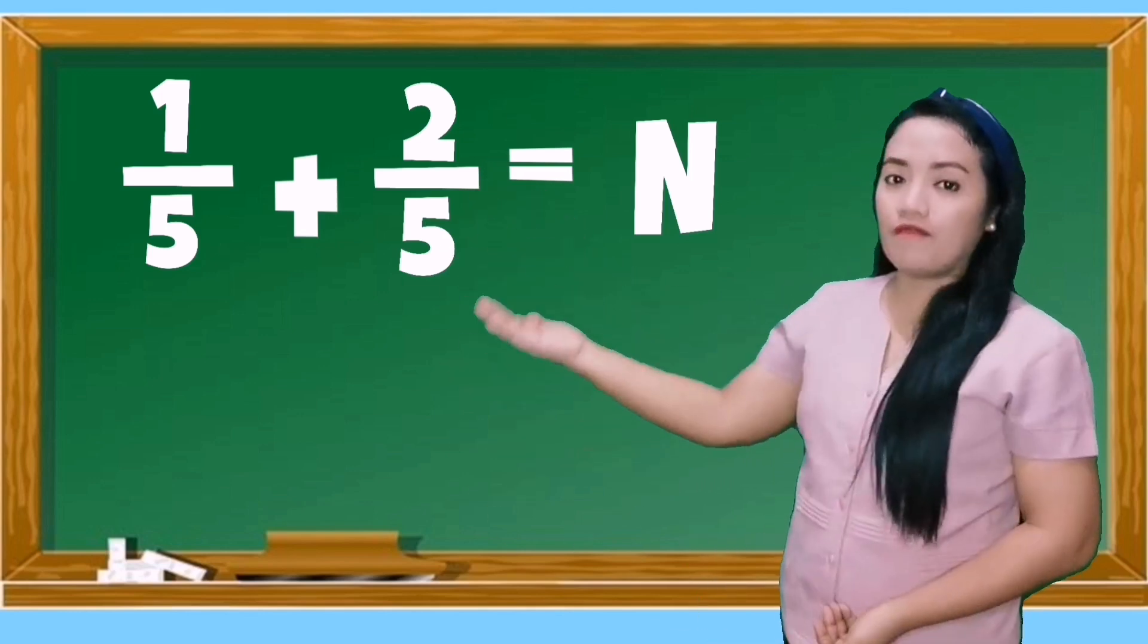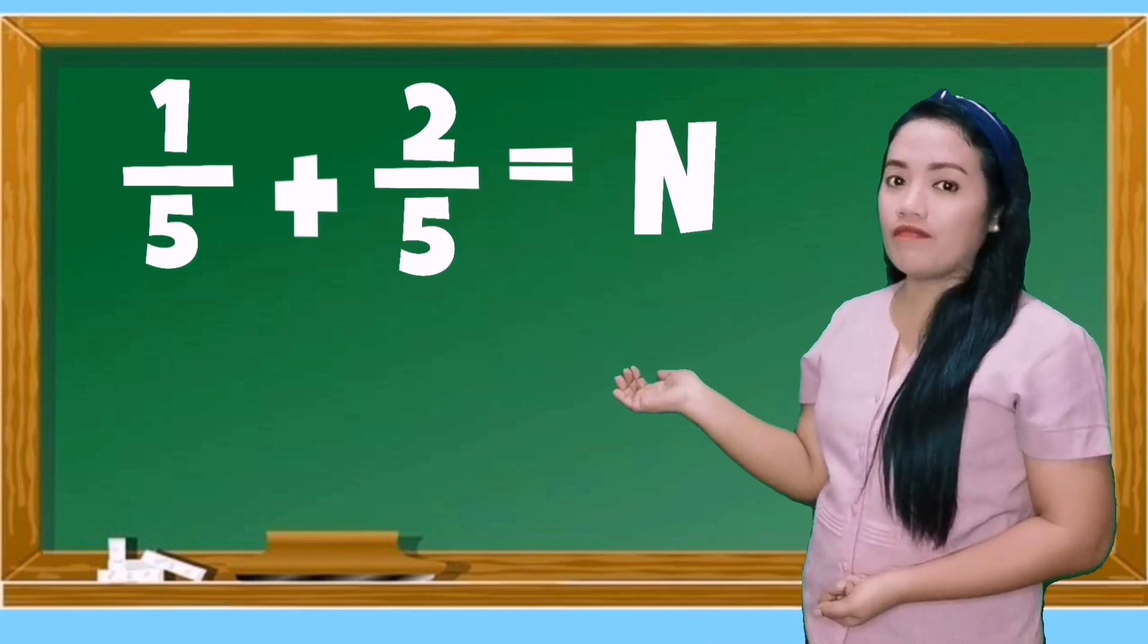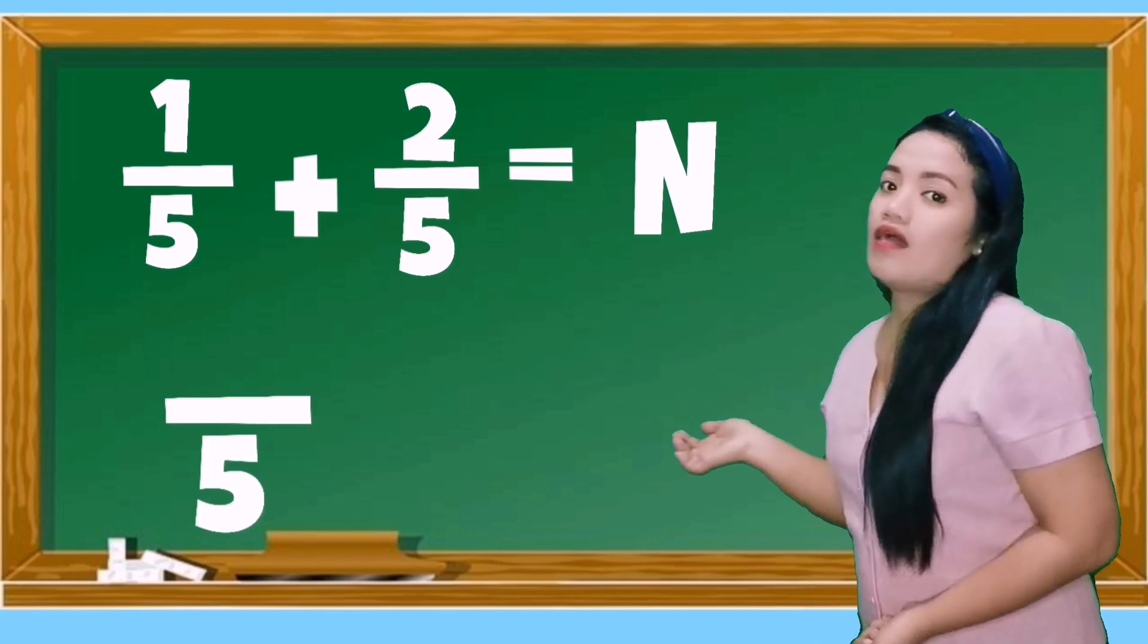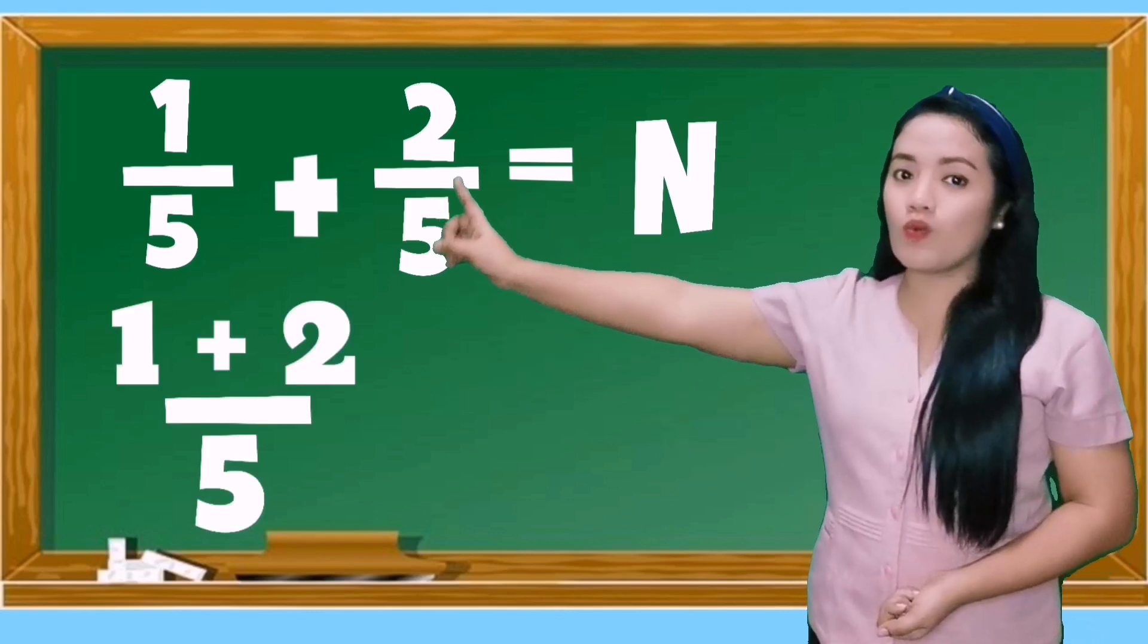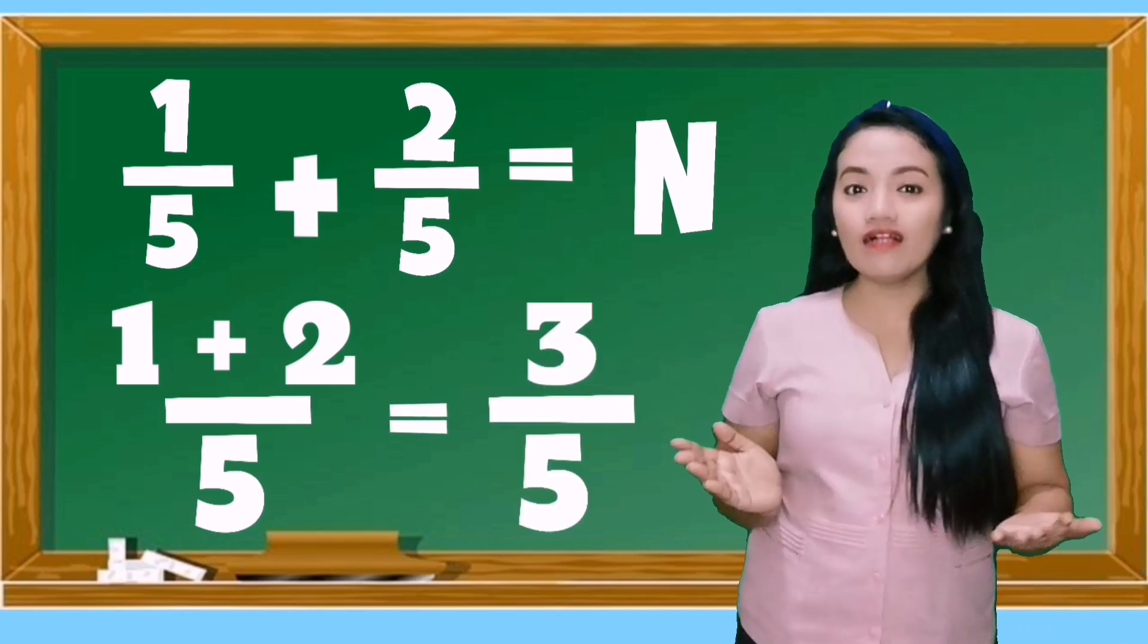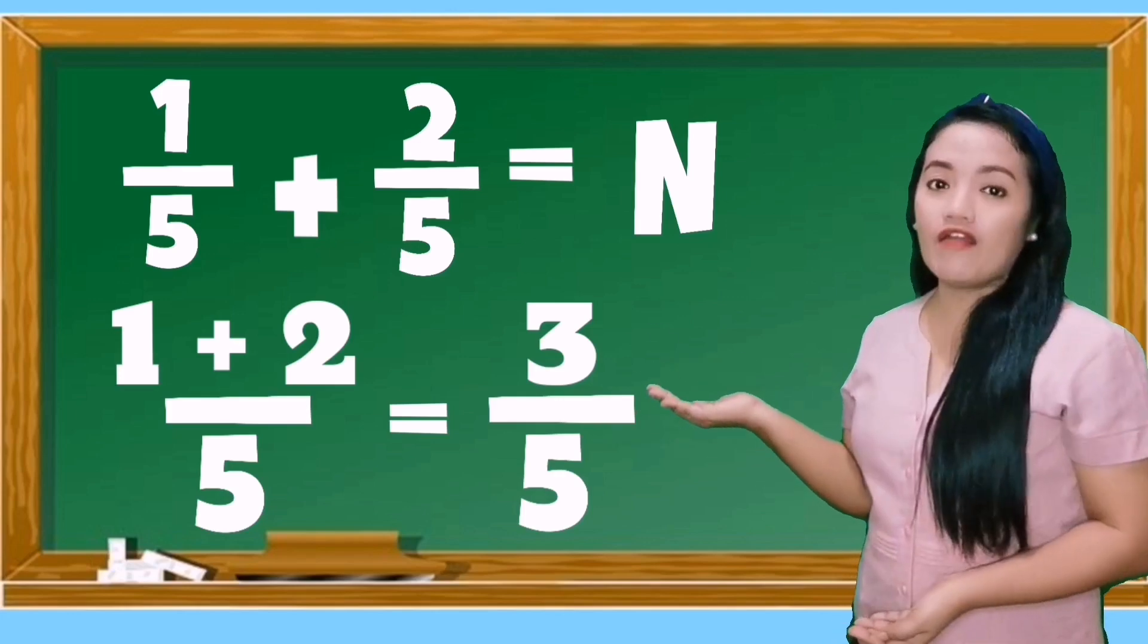1/5 plus 2/5, copy 5 as your denominator, then add the numerators 1 plus 2 is equal to 3. Now the final answer is 3/5.